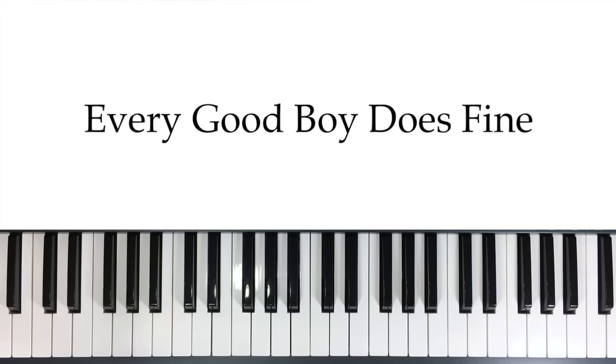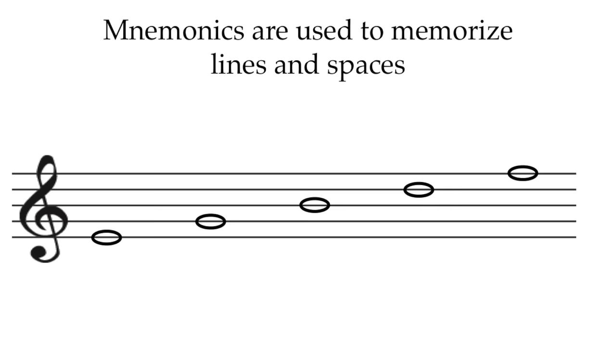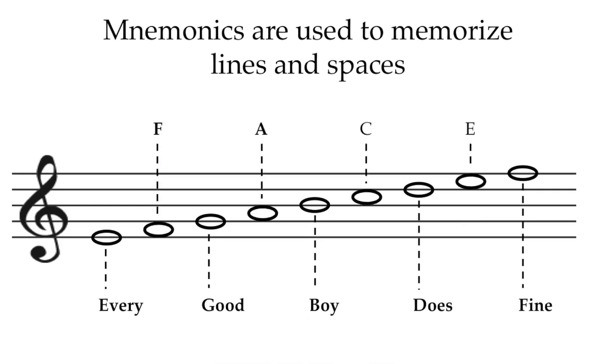Memorizing that phrase helps you memorize the five lines of treble clef are E, G, B, D, F. And the spaces are face, F-A-C-E. The bass clef also has its own mnemonics to help you memorize the lines and spaces there as well.